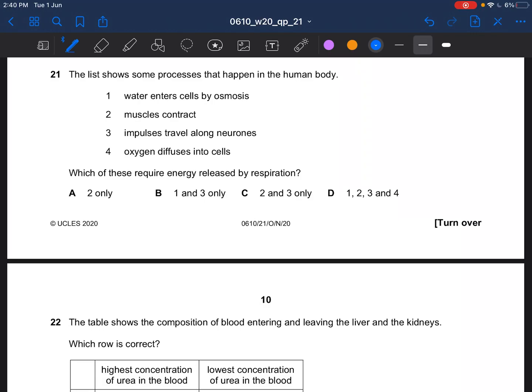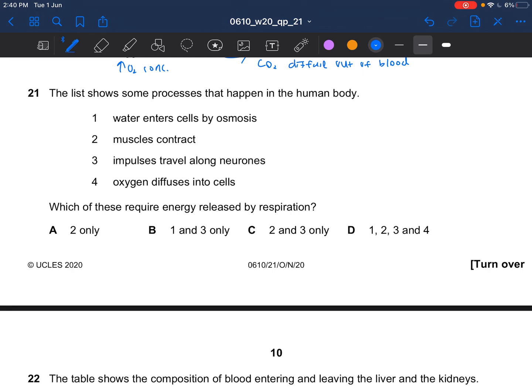Question 21. The list shows some processes that happen in the human body. Which of these require energy released by respiration? So you need energy for muscle contraction, energy for protein synthesis, you need energy for cell division and active transport, passage of nerve impulses, and also the maintenance of body temperature.